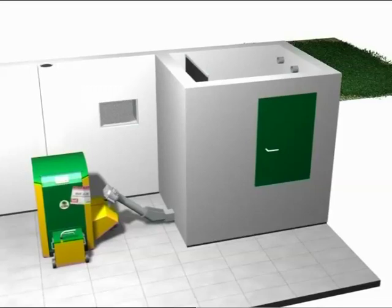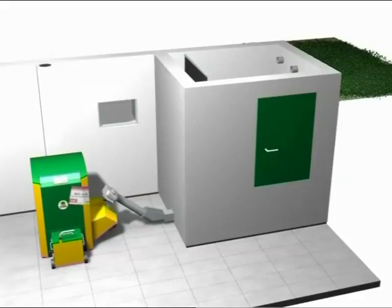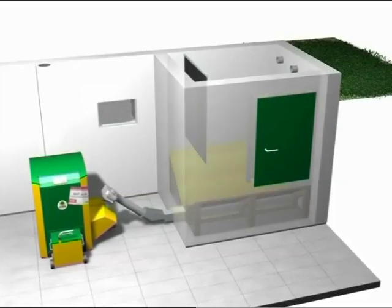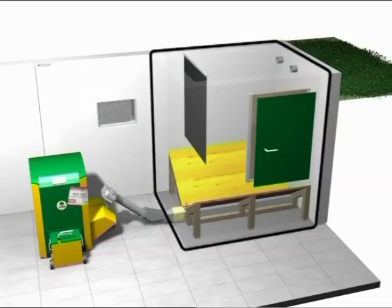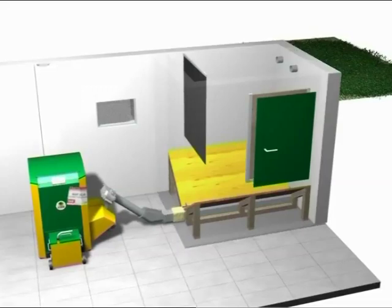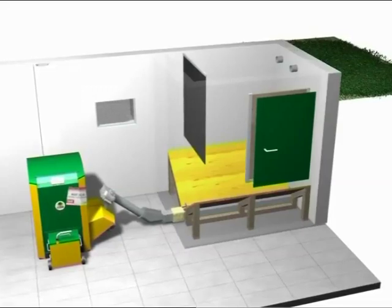Here, the KWB EasyFire with the elbow worm conveyor system. To the left, you can see the boiler room with the KWB EasyFire. To the right, the still empty pellet storage room with sloping floor and conveyor system.